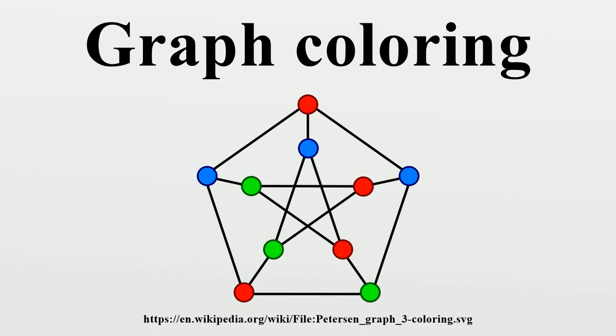In graph theory, graph coloring is a special case of graph labeling. It is an assignment of labels, traditionally called colors, to elements of a graph subject to certain constraints.